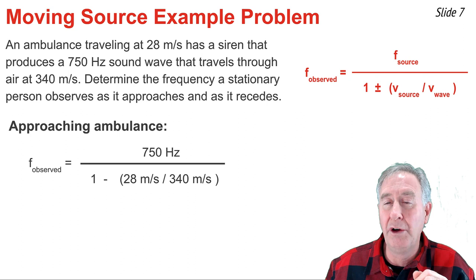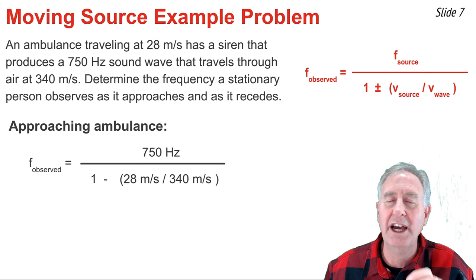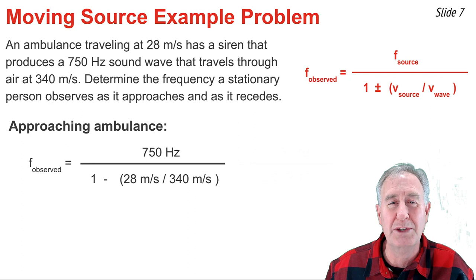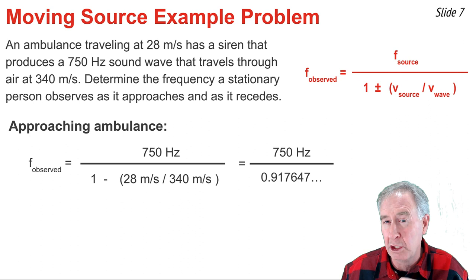Putting all those numbers in the right spots, I select the minus sign in the denominator. That makes the denominator less than 1 and gives a frequency greater than the source frequency. Evaluating the denominator first and then dividing 750 hertz by that result, I get approximately 817, or about 820 hertz.